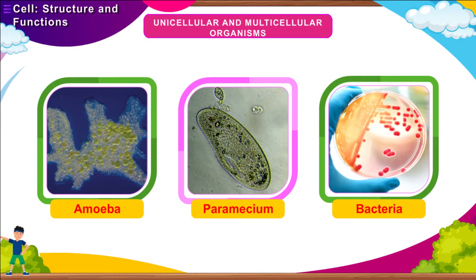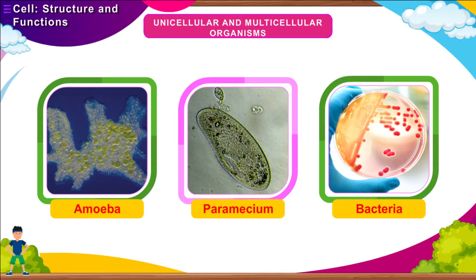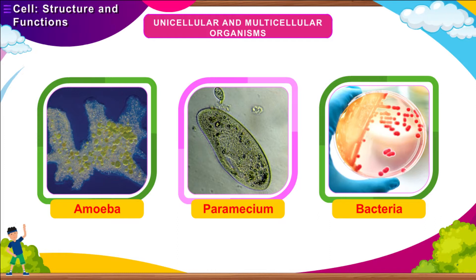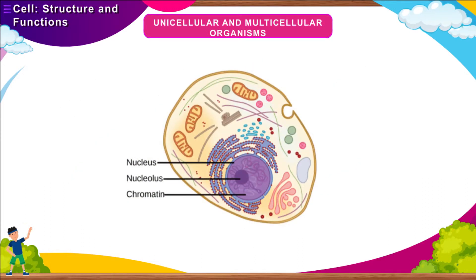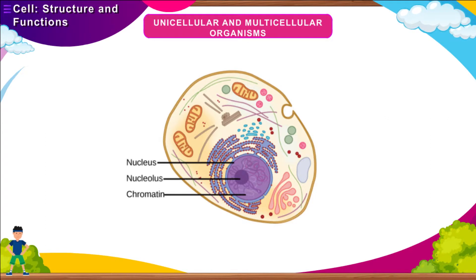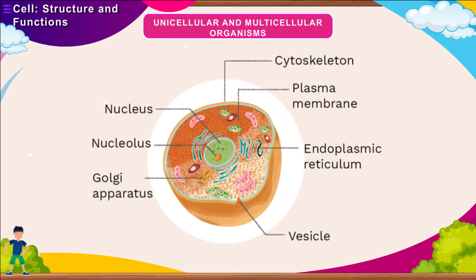Unicellular and multicellular organisms: Simple, minute, single-celled organisms are termed unicellular organisms. Some examples of unicellular organisms are amoeba, paramecium, and bacteria. Most unicellular organisms are prokaryotes. The organisms which are composed of many cells are called multicellular organisms. For example, animals, plants, and humans are multicellular organisms. Most multicellular organisms are eukaryotes.